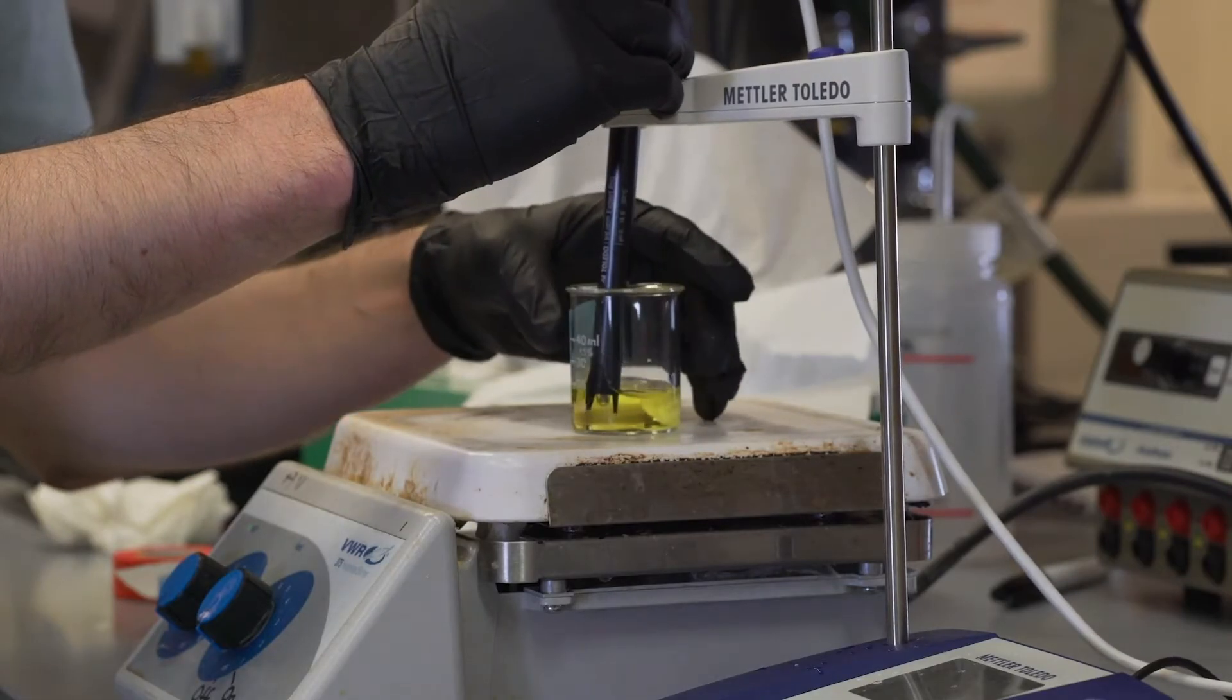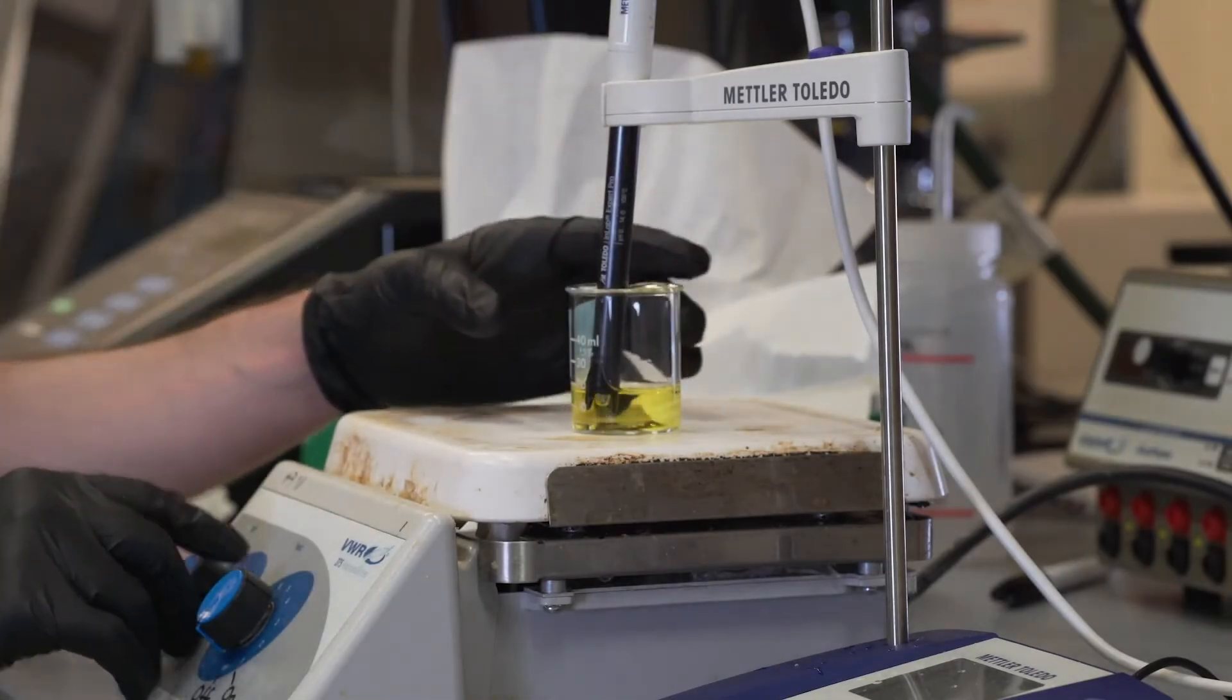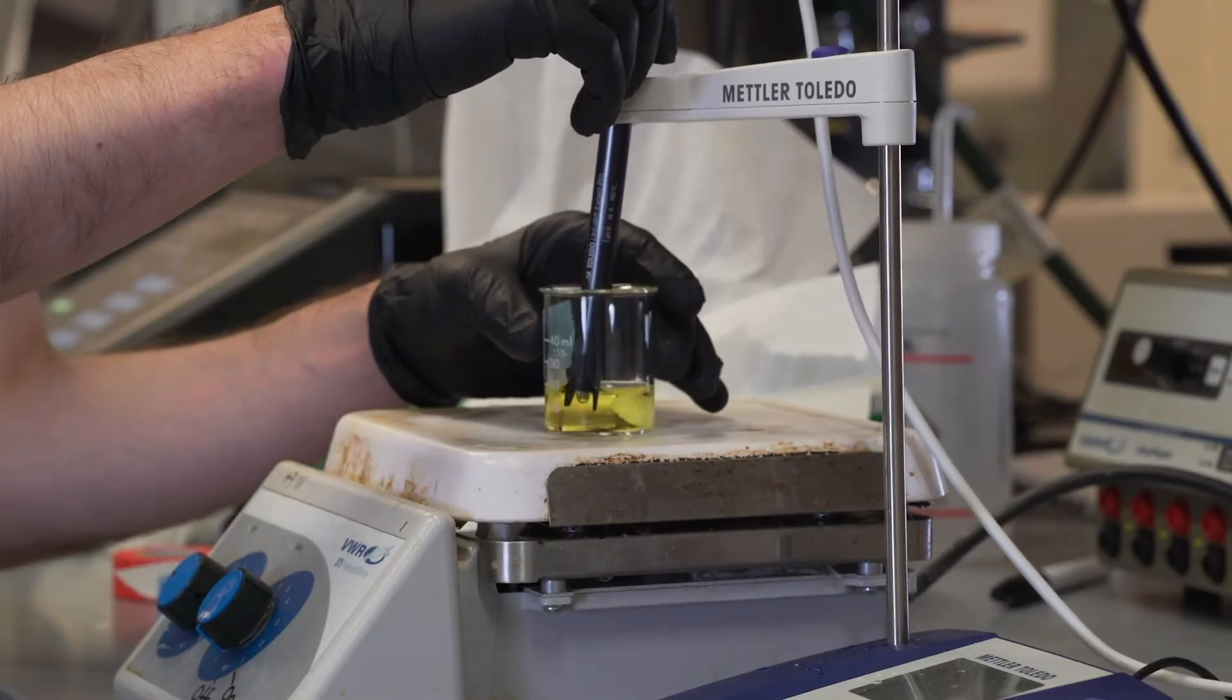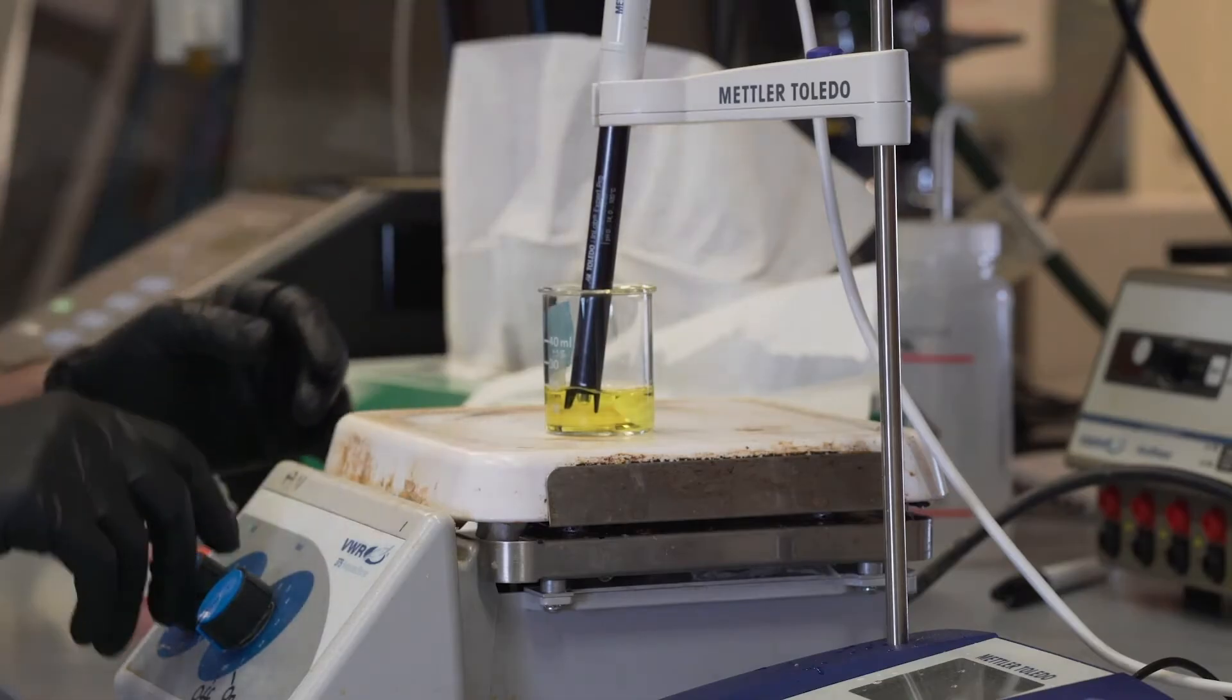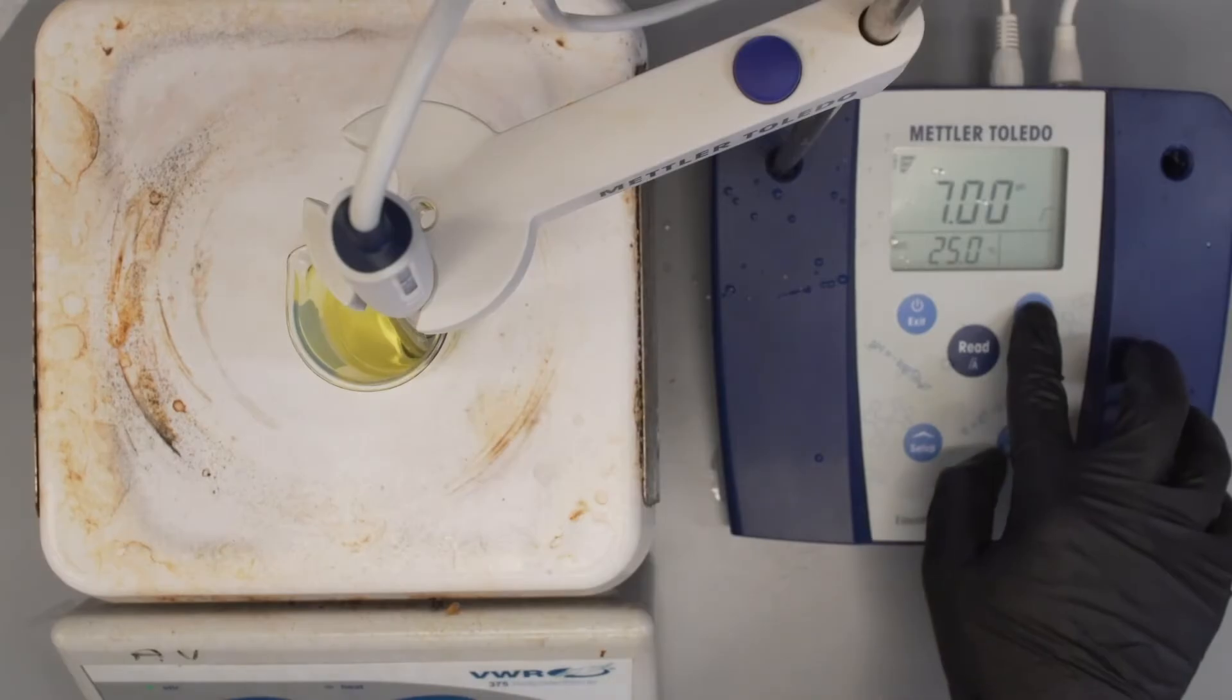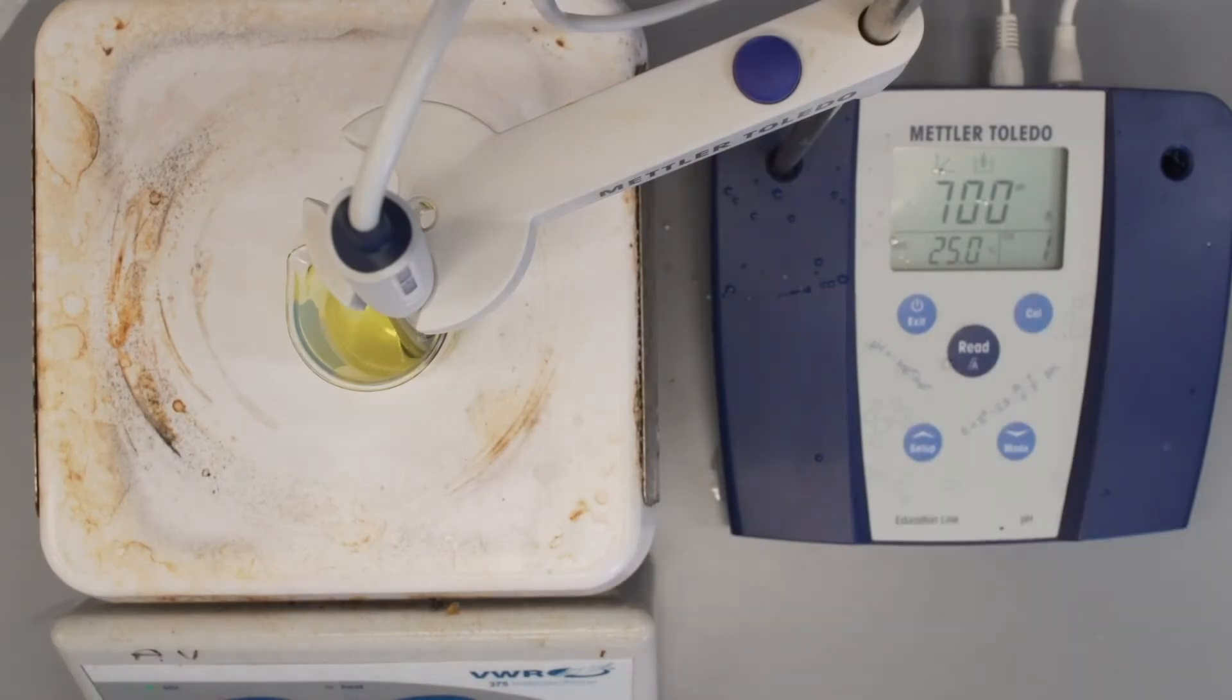The calibration should begin with the pH 7 buffer. Submerge the electrode in the buffer, but make sure it's not touching the bottom of the beaker or a stir bar if you're using one. Press the calibrate button on the pH meter panel and wait for the readout to stabilize.